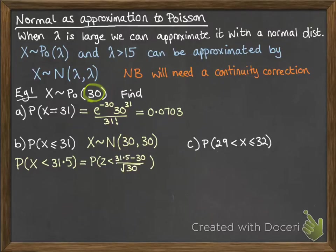So that's the same as the probability that z is 31.5 minus 30 over root 30. And again, if you don't remember how to find probabilities off a normal curve, go look up the AS video on it from last year. So that gives us a z value of 0.274. And we can use the tables to work out that that's 0.608.